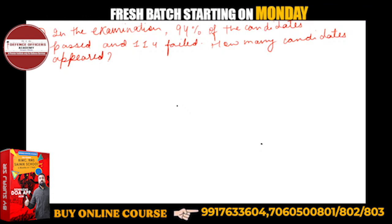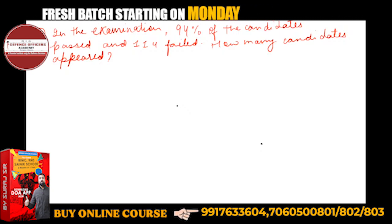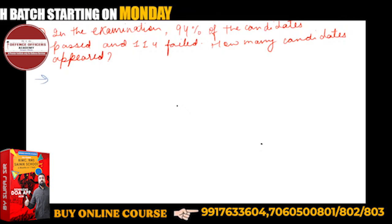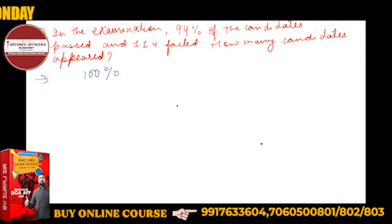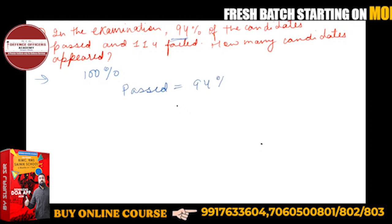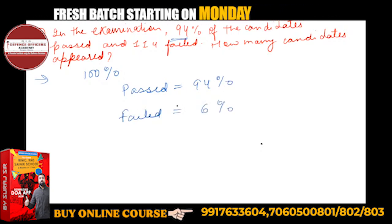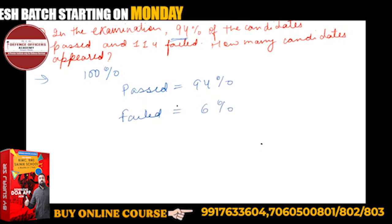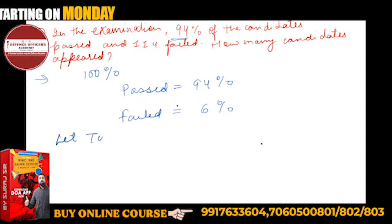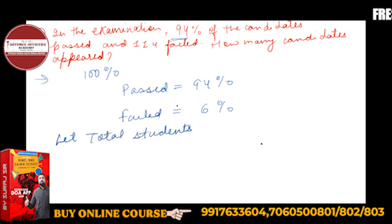See, everything is 100% as you are all aware of. So if 94% passed, then automatically that will be remaining 6%. If you take total students, let total students be x.